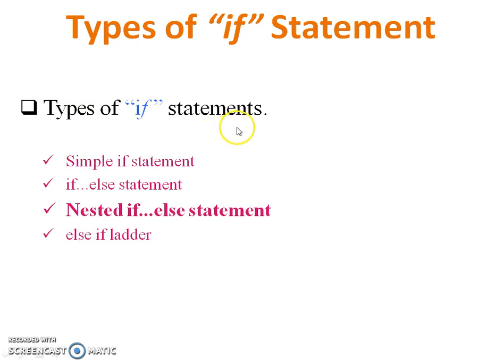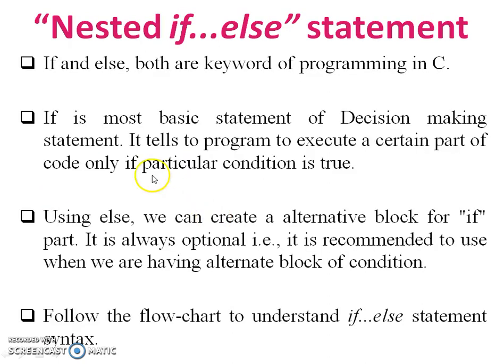This is the type of if statement. Today I have to teach you in this video nested if-else statement. If and else both are keywords of programming in C. If is most basic part of decision making statement. It tells the program to execute a certain part of code only if a particular condition is true. Using else, we can create an alternative block for the if part. It is always optional. It is recommended to use when we are having an alternate block of condition. Follow the flowchart to understand if-else statement syntax. This is not a simple if-else, it is nested if-else.